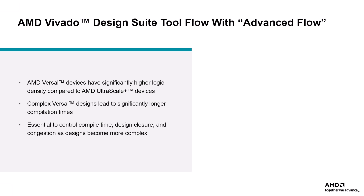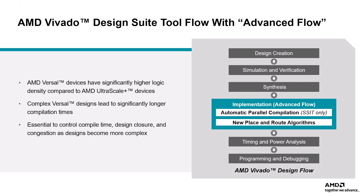To address this challenge, optimizing and accelerating the place and route process is crucial. Starting with the 2024.2 release, the Vivado design suite introduces the Advanced Flow for all Versal devices. It is enabled automatically. A typical design process starts with design creation, followed by simulation and verification, and then synthesis. The Advanced Flow focuses on the implementation stage, which includes automatic parallel compilation for SSIT devices and new place and route algorithms.